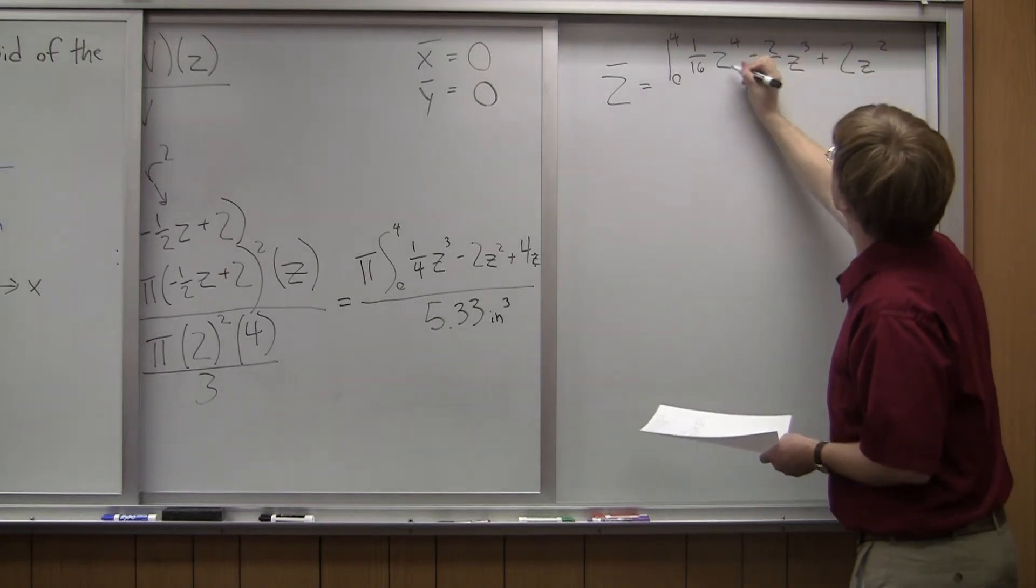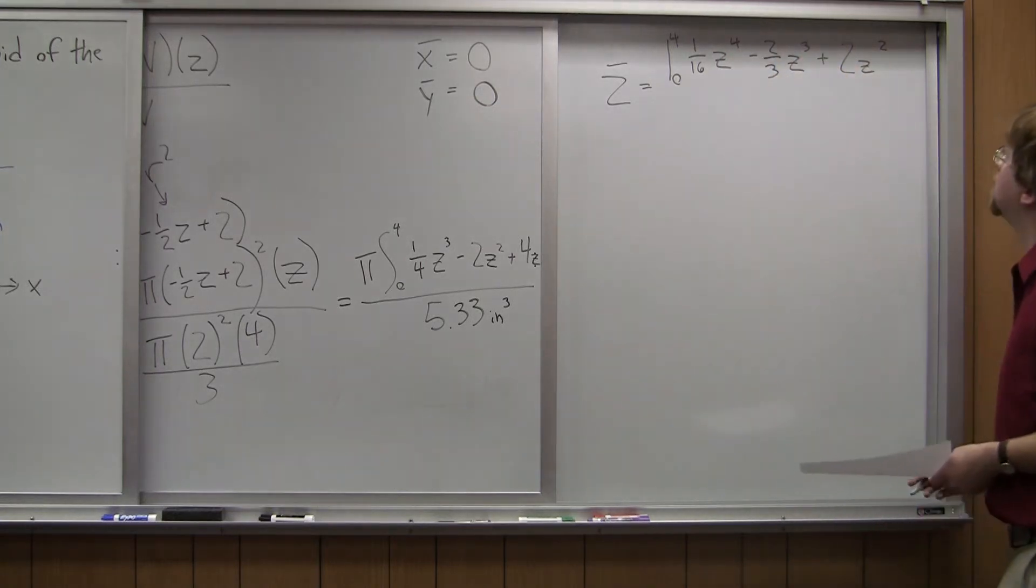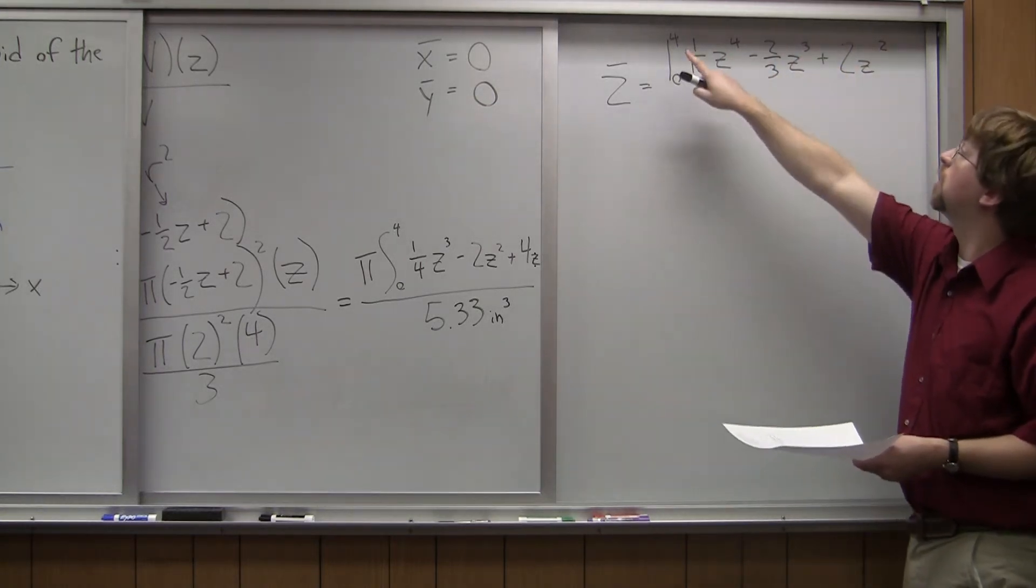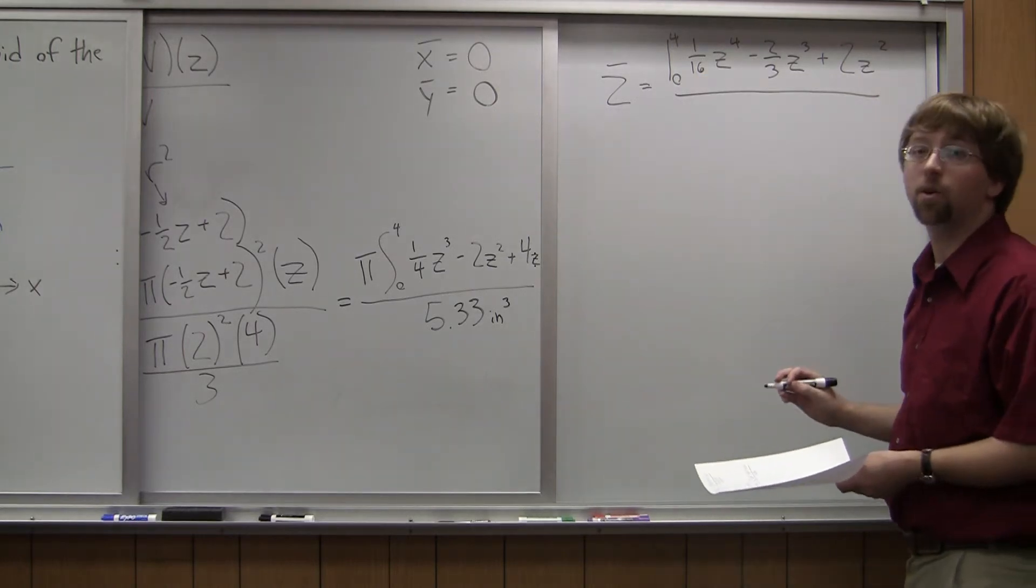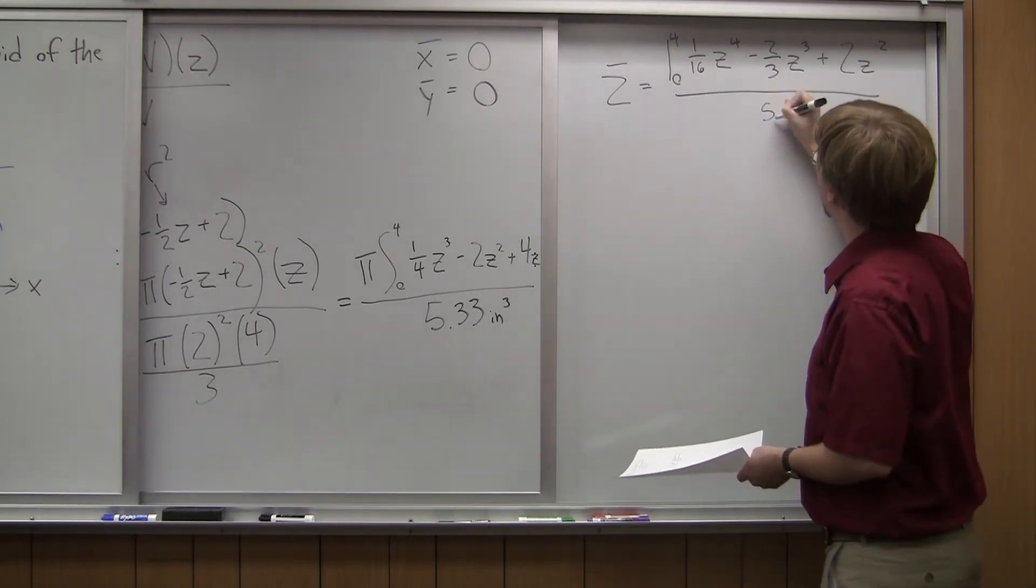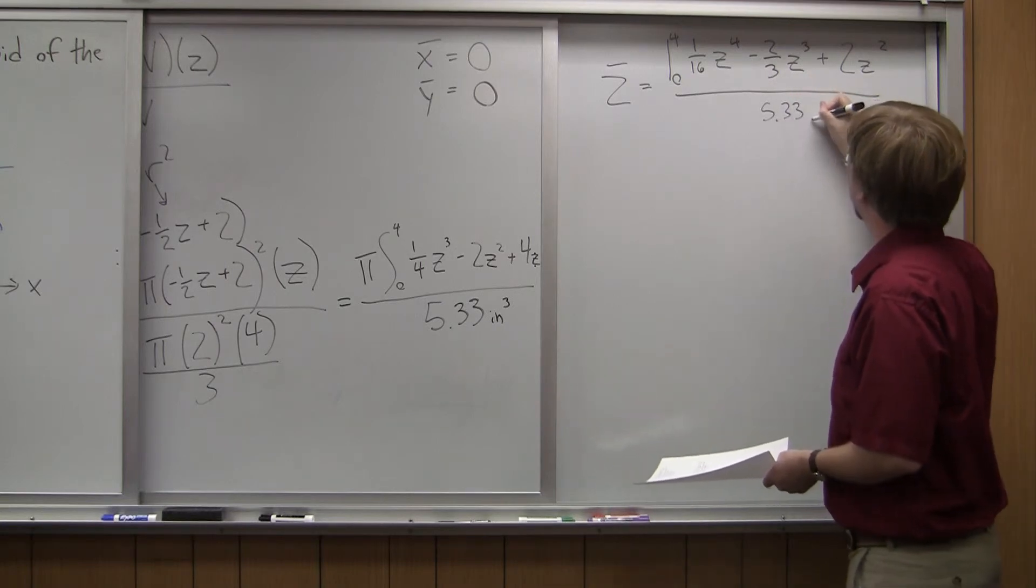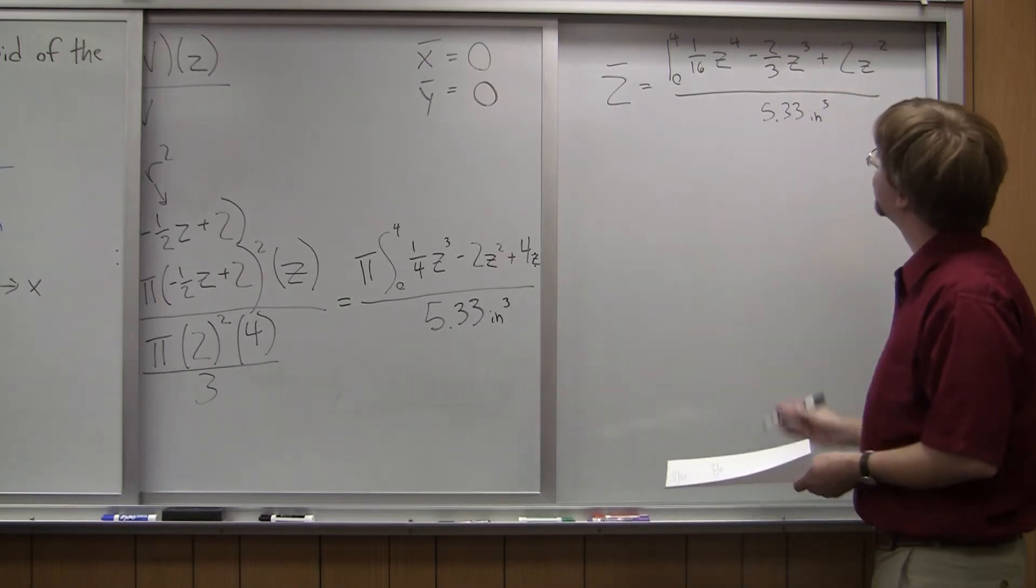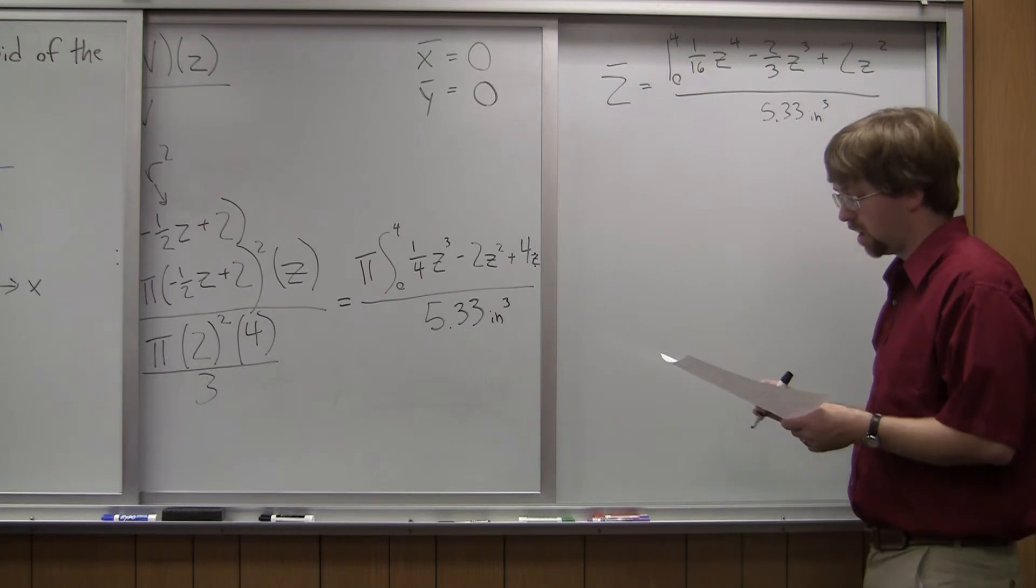Z, add a crosshash in there. So I'm evaluating that from zero to four. And I'm dividing that whole thing by my volume of 5.33 inches cubed.